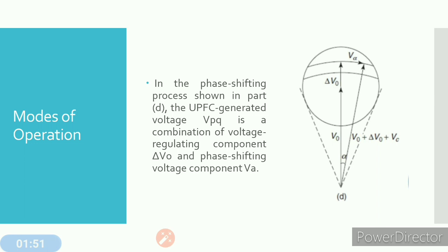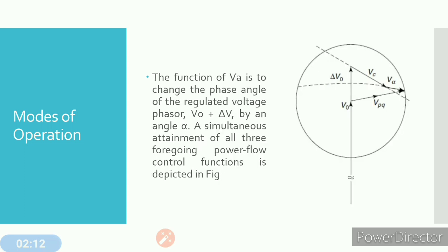In the last figure, the phase shifting process is shown. The UPFC generates voltage Vpq as a combination of a voltage regulating component delta-V0 and a phase shifting voltage component Va. By doing this, we can change the load angle delta of the voltage. The voltage Va changes the phase angle of the regulated voltage, by a phasor (V0 + delta-V0) by an angle alpha.